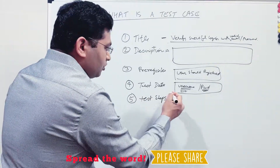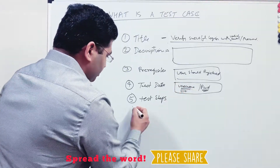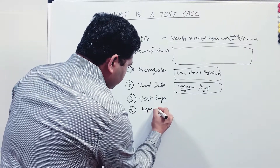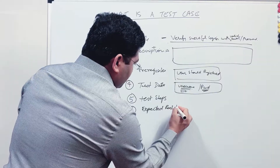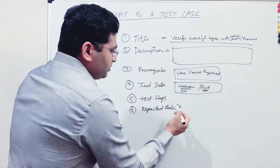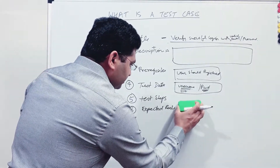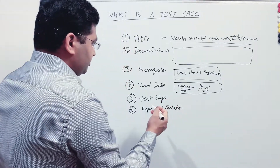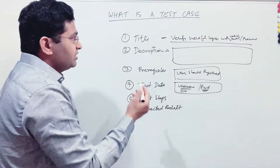Along with the test steps, you also write the expected outcome or expected result. When somebody performs a particular step, what should be the expected result in that particular case? That is another important piece of information that needs to go in the test case. So these are the very important key information that needs to go in the test case.